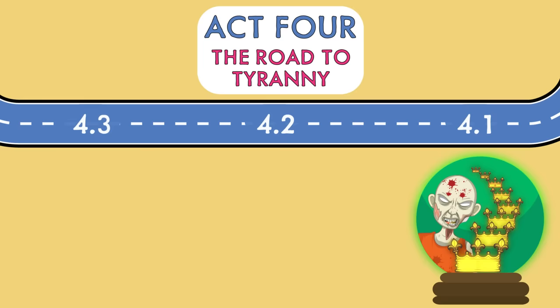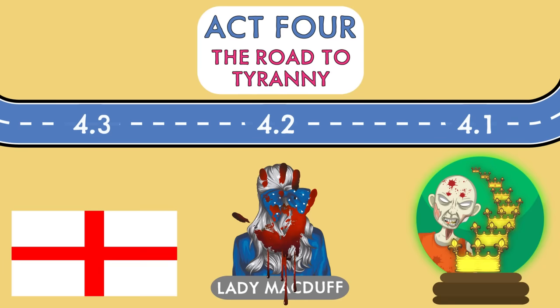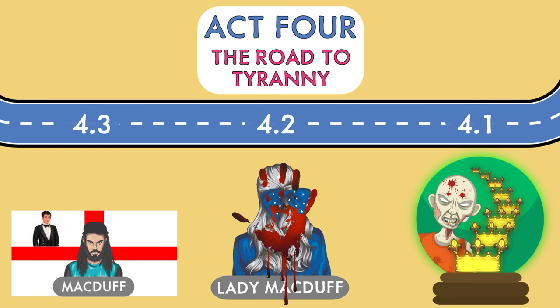Macbeth then learns that Macduff has also fled to England, and all of this makes Macbeth even more insecure. The very next thing we see is Lady Macduff talking about how her husband lacks courage for deserting her. Macbeth's agents arrive, murder her son, and then kill her as a punishment for Macduff's disloyalty. Meanwhile, in England, Macduff eventually persuades Malcolm, the son of Duncan, to return to Scotland to join the fight against Macbeth and then be crowned king. Macduff then discovers that Macbeth has killed his children and his wife — he refers to these deaths as 'all my pretty chickens and their dam' — and vows to avenge their deaths.